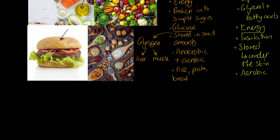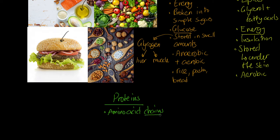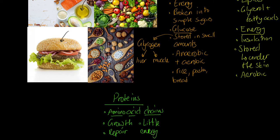Proteins are where biology gets really fascinating. Proteins are what we describe as amino acid chains. When we consume them — whether in fish, nuts, or meat — we can't absorb amino acid chains directly, but we can break them down into individual amino acids and absorb those. They are then rebuilt and used for growth and repair. We also get a very small amount of energy from protein.